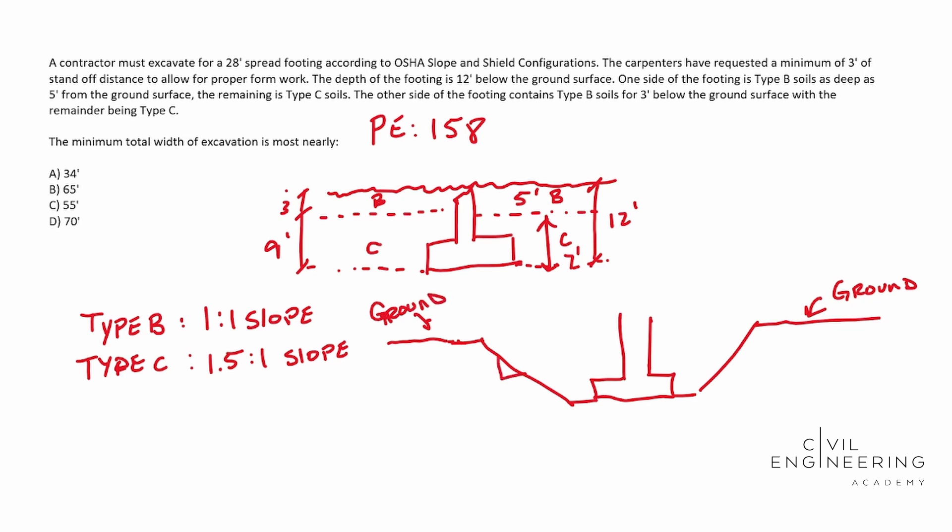And basically these guys are going to be at a 1.5 to one slope. And then we have three feet right here. And then we have our spread footing, which is 28 foot as given in the problem. And we have another three feet of standoff distance and boom. And so, okay, so let's find the total depth here. Well, we know it's 12 feet, and we know we're going to be at a constant of 1.5 to one slope. So by using this, we can go ahead and do a trick.